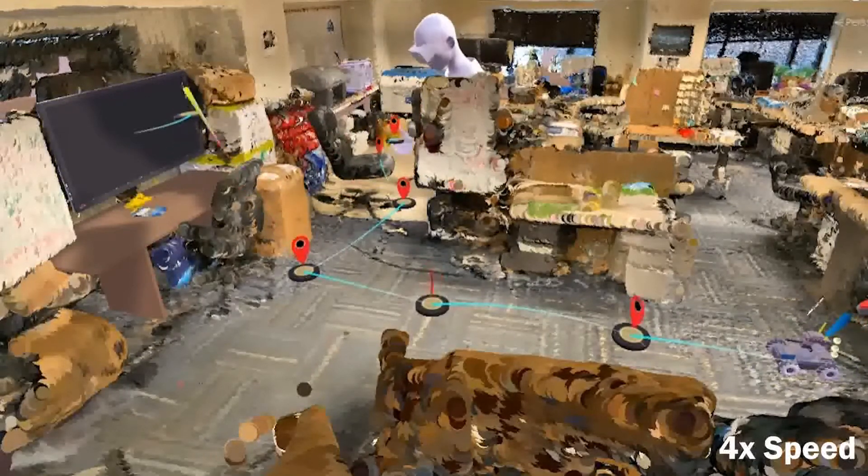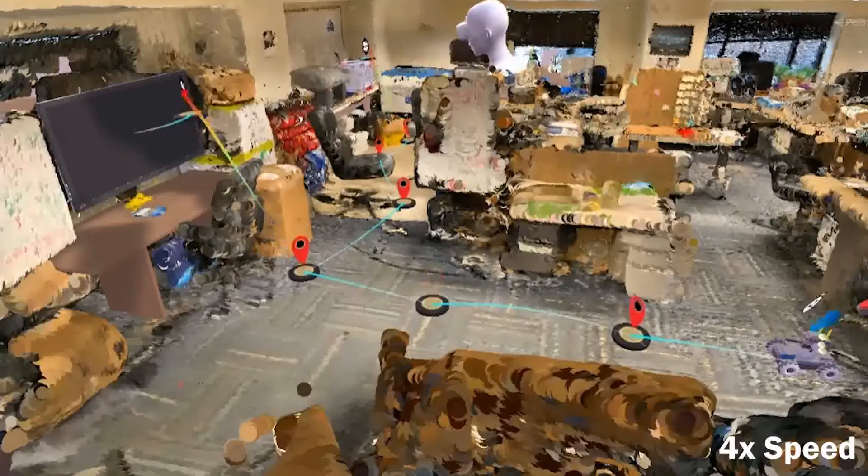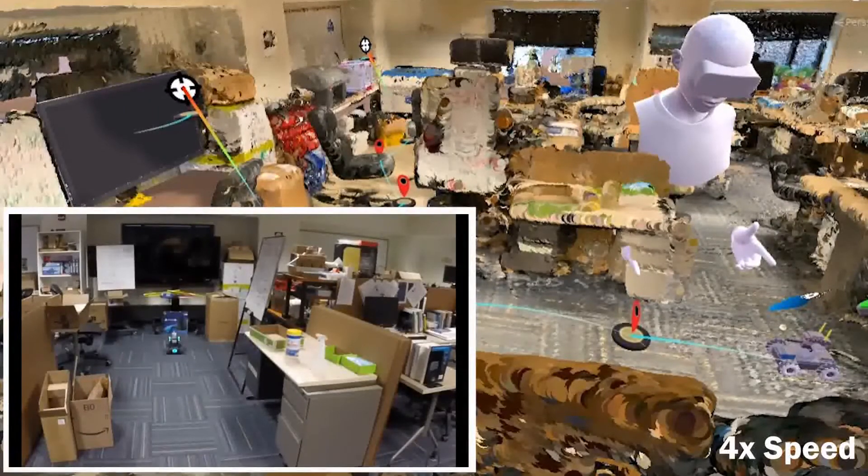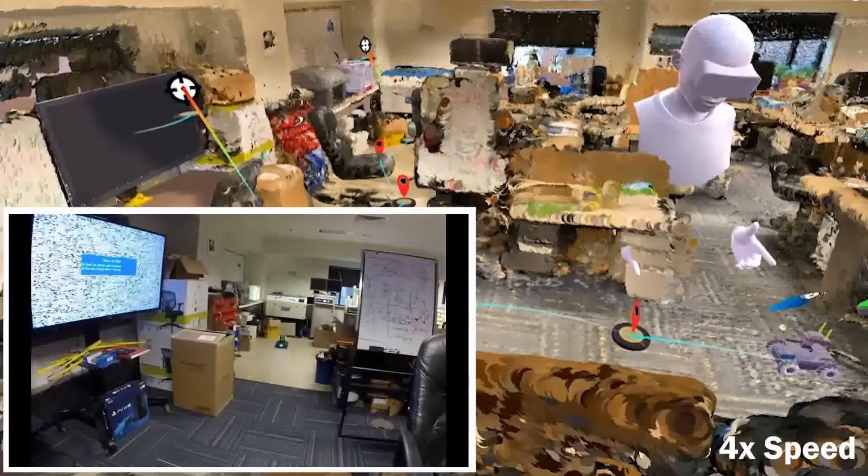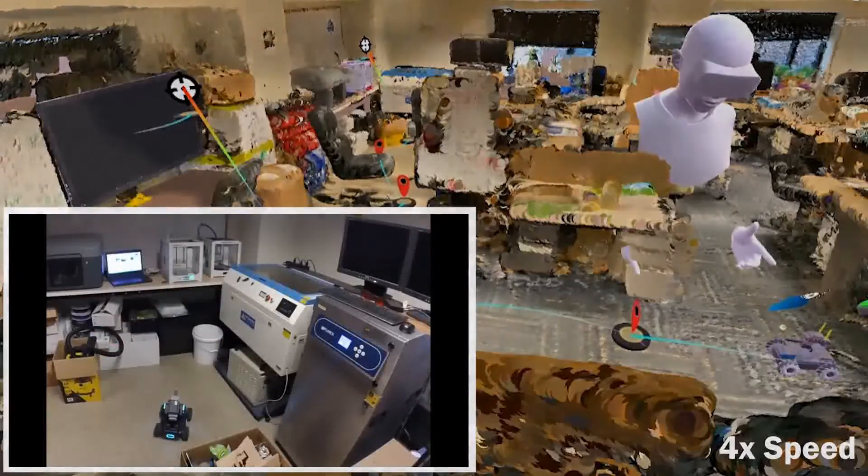The third use case demonstrates the applicability of our system in human-robot collaboration. A user specifies the path that the robot is to follow and authors the robot tasks in the virtual environment, and the robot then performs the corresponding actions in the real world. Thank you.